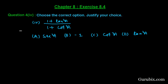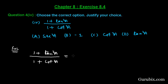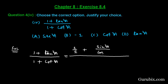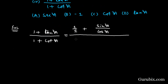We are given (1 + tan²A) / (1 + cot²A). We can write tan²A as sin²A / cos²A, and in the denominator we have 1 + cos²A / sin²A.